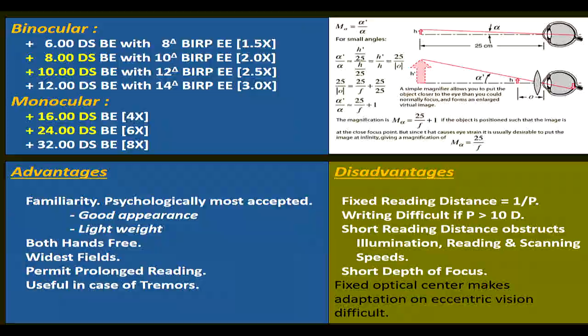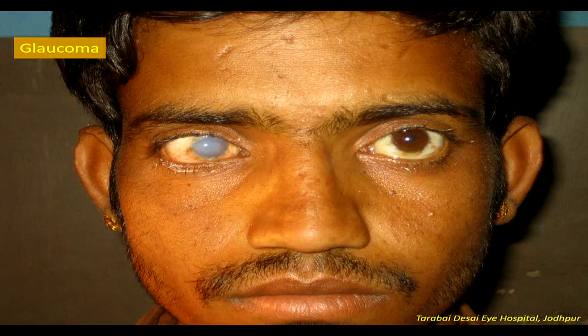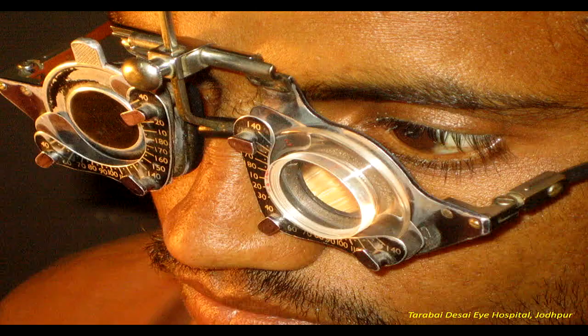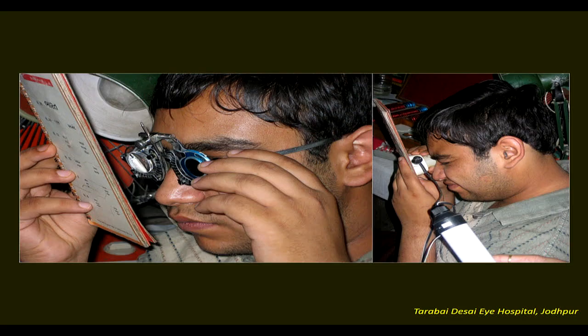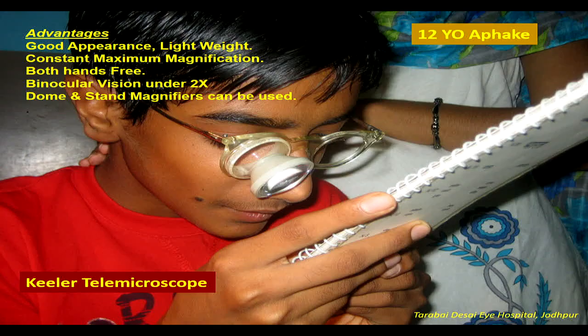This shows a glaucoma patient using an aspheric lens for near work. These are myopic patients with macular degeneration — high plus aids improve the visual acuity of these patients. The left picture shows a patient trying out an aspheric lens for near work; the right picture shows the same patient trying out an illuminated magnifier. The Keplerian telemicroscope offers advantages of good appearance, light weight, constant maximum magnification, both hands free, and binocular vision under 2x — dome and stand magnifiers can also be used alongside.